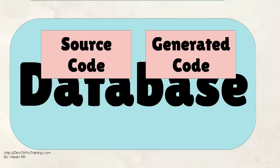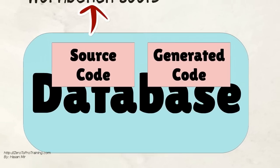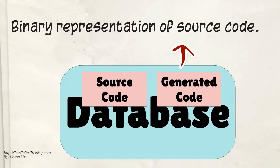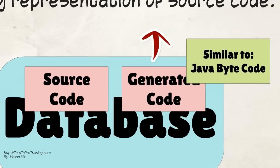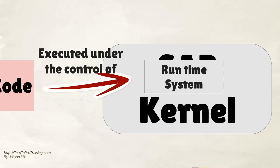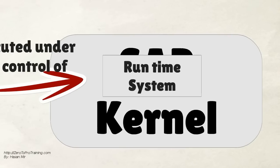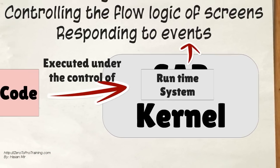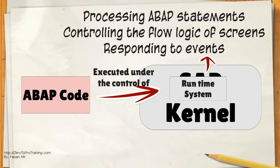In the database, all ABAP code exists in two forms: source code and generated code. Source code can be viewed and edited with the ABAP workbench tools. Generated code is a binary representation of source code, comparable to Java bytecode. ABAP programs execute under the control of the runtime system, which is part of the SAP kernel. The runtime system is responsible for processing ABAP statements, controlling the flow logic of screens, and responding to events.